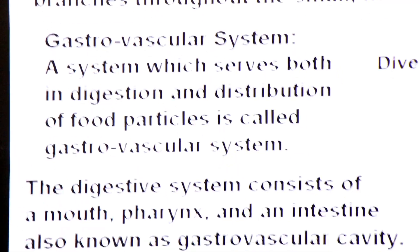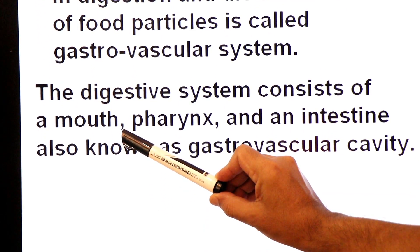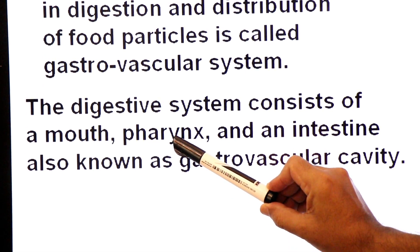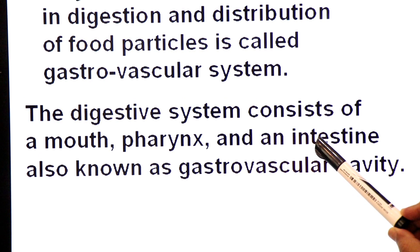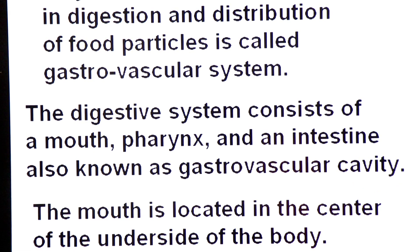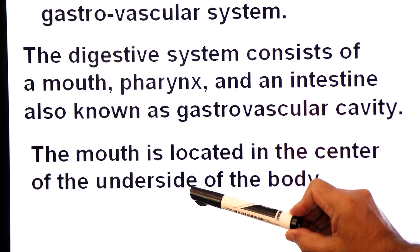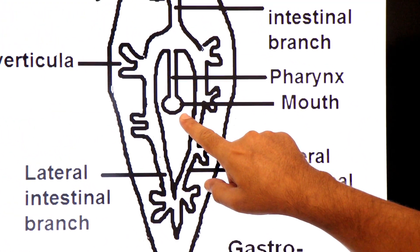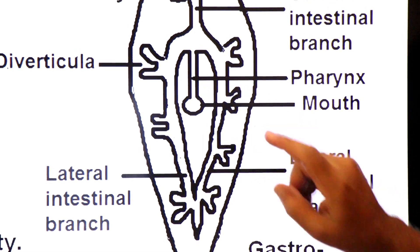The digestive system of planaria consists of a mouth located in the center of the body. It opens into a tubular structure called pharynx, and in turn the pharynx opens into an intestine. This intestine is also called the gastro-vascular cavity. The mouth is located in the center of the underside — the ventral side — of the body, and it opens into the tubular pharynx.